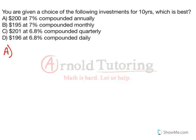Part A is going to be the easiest one because the 7% is already compounded annually, so we'll just take 200 and 1.07 per year, roll that forward for ten years, and it's a quick calculation where we get $393.43.